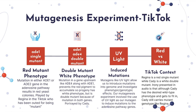In our mutagenesis experiments from the lab, we had two mutant phenotypes we were looking for. The first started with a wild-type white phenotype. When irradiated with UV light, some of the haploid cells grew into red colonies because a mutation in either AD1 or AD2 was induced by the UV radiation.